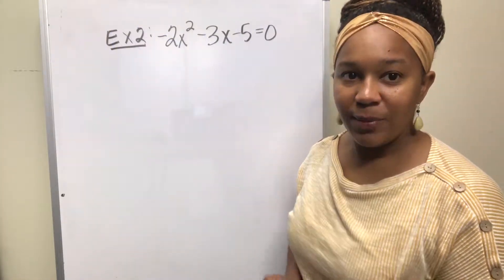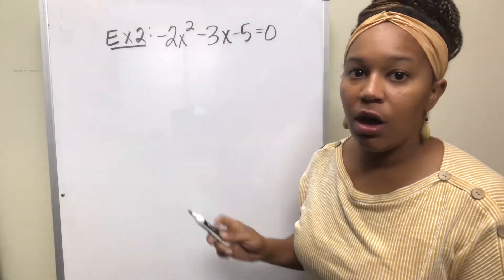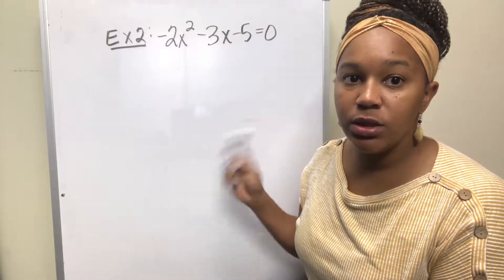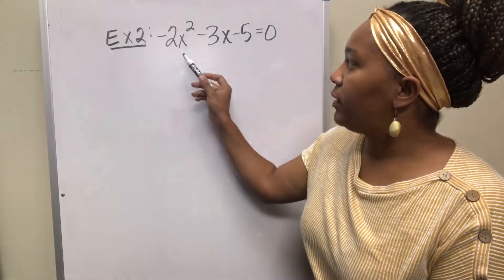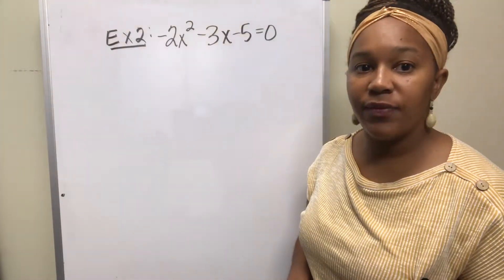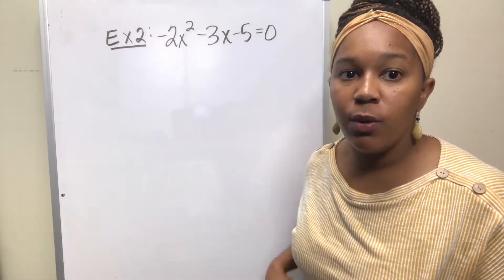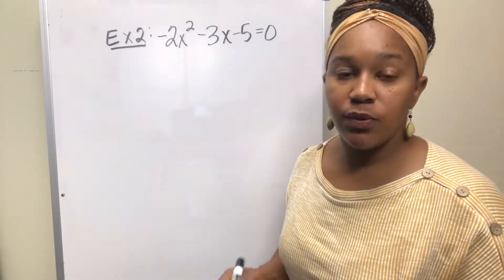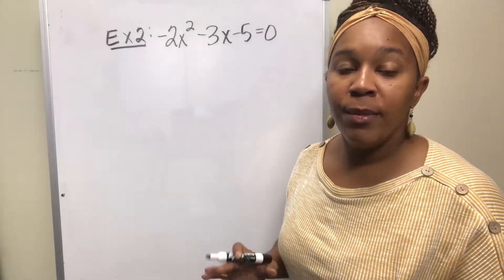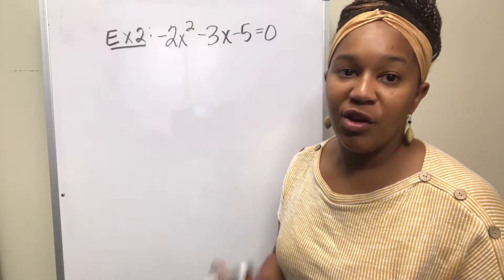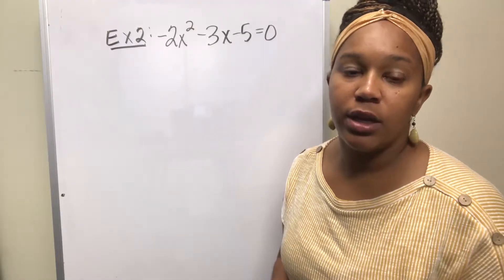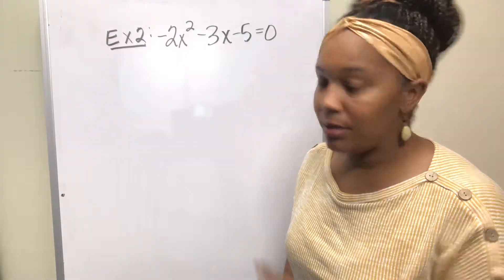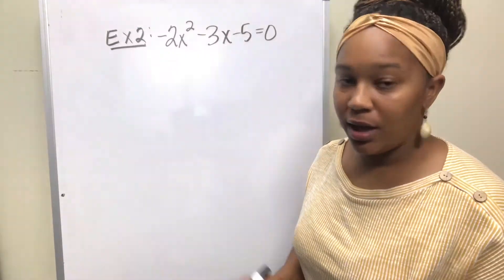Let's look at another example. Example two: we want to solve this quadratic equation using the completing the square method. We have negative 2x squared minus 3x minus 5 equals 0. Remember, the whole goal is to create a perfect square so we can write the quadratic equation with only one variable present — only one x written in the equation.